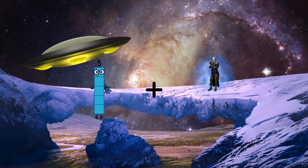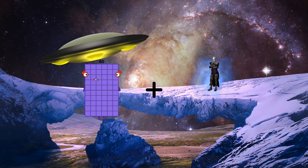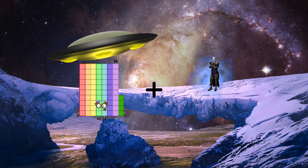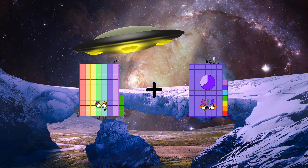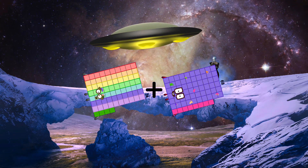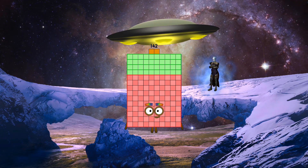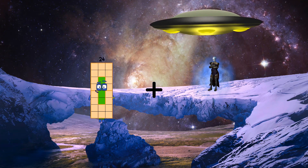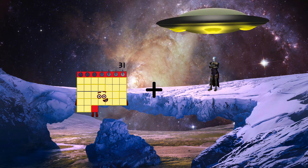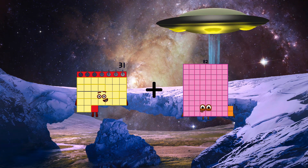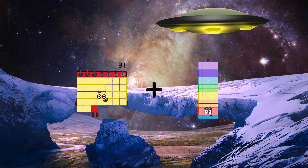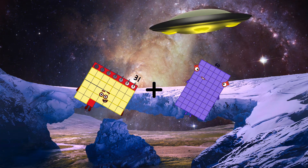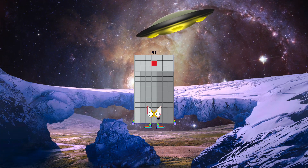74 plus 68 equals 142. 31 plus 60 equals 91.